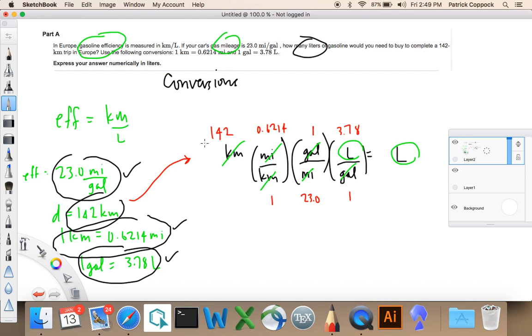This is 142 times 0.6214 times 3.78 divided by 23 equals, where am I here? Equals 14.50185 and so on.